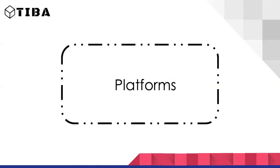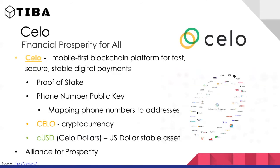Moving to platforms — first is Celo, whose mission is financial prosperity for all. They're focused on mobile-first, building the fastest, most secure, and stable digital payment platform. They use proof of stake, and an interesting feature is phone number as public key, mapping your phone number to an address so people can send money to you. They have two tokens: CELO, the cryptocurrency, and cUSD, a stablecoin pegged to the US dollar on the Celo blockchain.